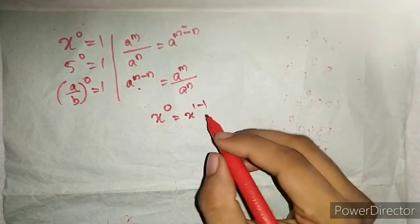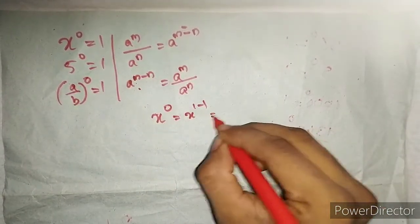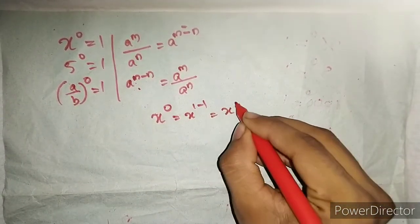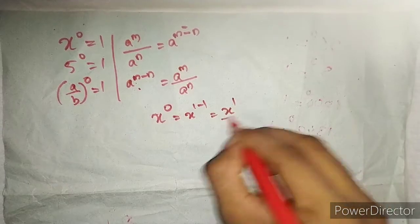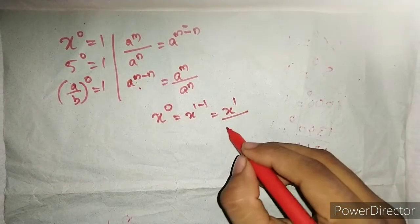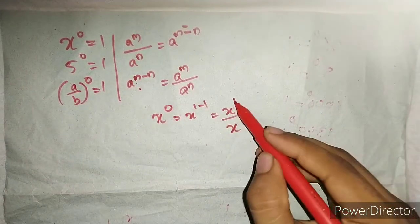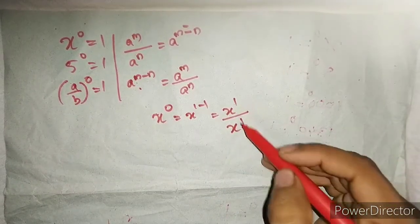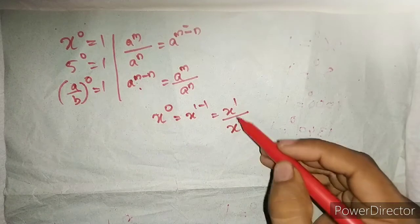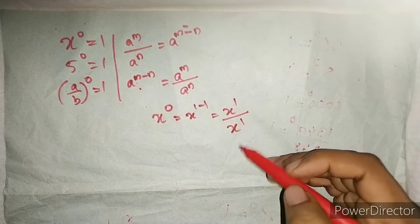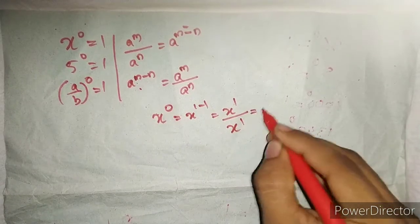m raised to 1 is 1. x raised to 1 divided by x raised to 1. The result is positive. The value of x raised to 1 divided by x raised to 1 gives x raised to 0, which is equal to 1.